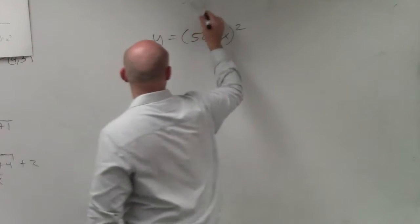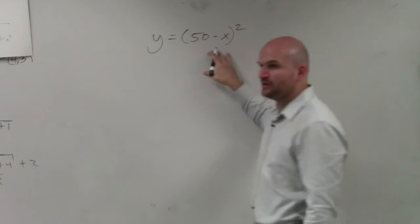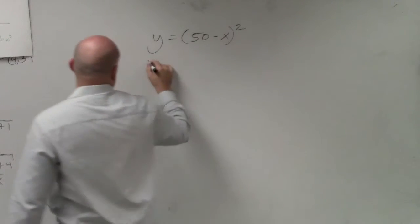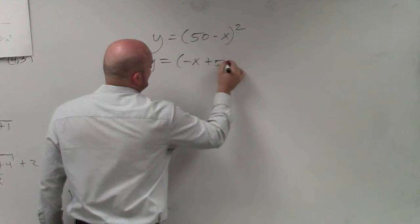First thing is, I remember, I want to rewrite this always with my variable in front. So I'll rewrite this as negative x plus 50.